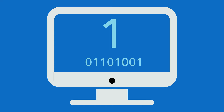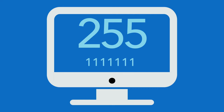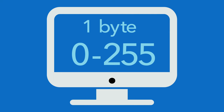Each byte can contain 8 ones or zeros. And with 8 digits, the biggest number you can make is 255 — that's 1, 1, 1, 1, 1, 1, 1, 1. Therefore, using the smallest amount of memory for a value — 1 byte — offers a range of 0 to 255.